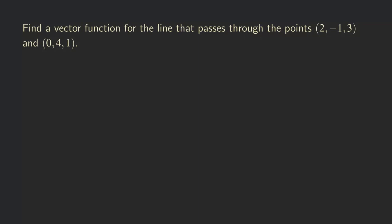So how do we do it? Because we're trying to come up with the vector function, what we want to do is first recall the vector function for a line. So we have a vector function R of T, where the independent variable — the parameter — is T, and then we have R naught plus T times V.